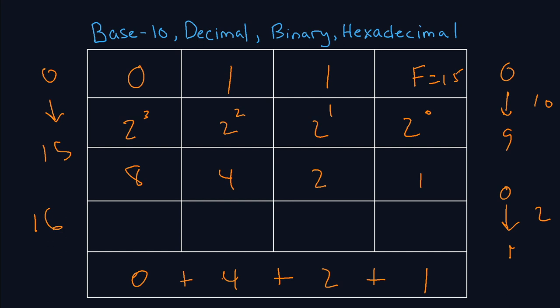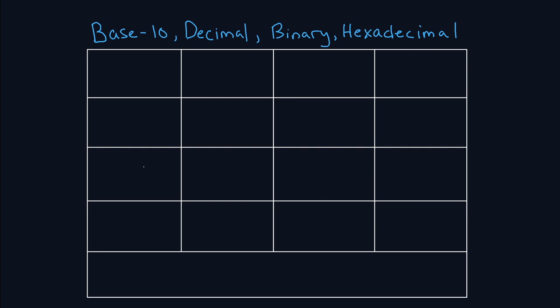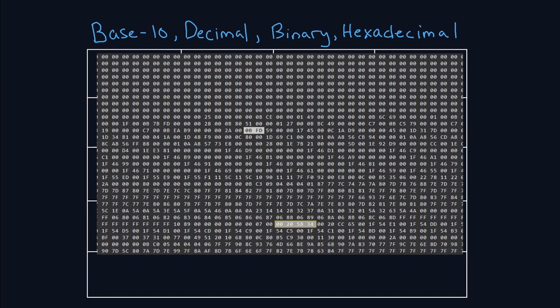If we clear all this out and we look at the base 16, we now know that 16 to the third power, 16 to the second power, 16 to the first power, 16 to the zero power. So we know that these numbers are going to be 4096, 256, 16, and 1. So if we wanted to take an example here, in this example we have 0BFD. We know that those numbers are actually going to be representative of real numbers.